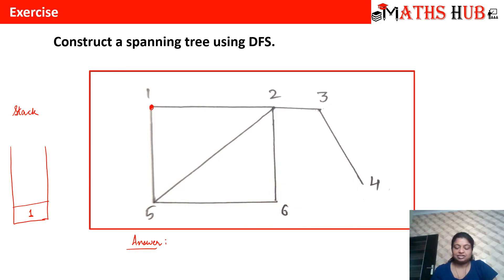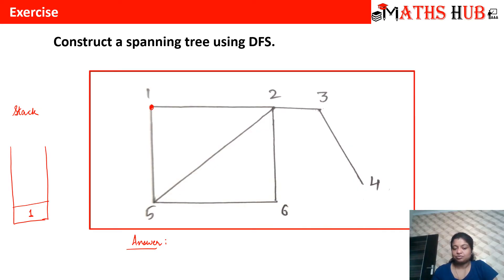From vertex one, check who the adjacent vertices are — we have vertex two or vertex five. It is your choice; we have to advance to a new adjacent vertex. Either we can advance to two or to five. Let us advance to vertex two. So in our answer we started from vertex one and now we are at vertex two.